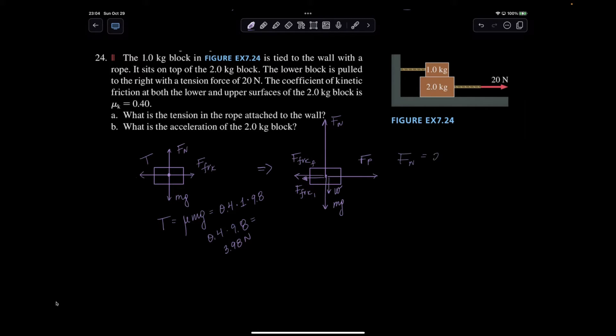Go ahead and find it. It's going to be 2 times 9.8 plus 1 times 9.8. So basically, the normal force for the two objects, you just look at them as 3 times 9.8, 30 minus 0.6, so 29.4 newtons.